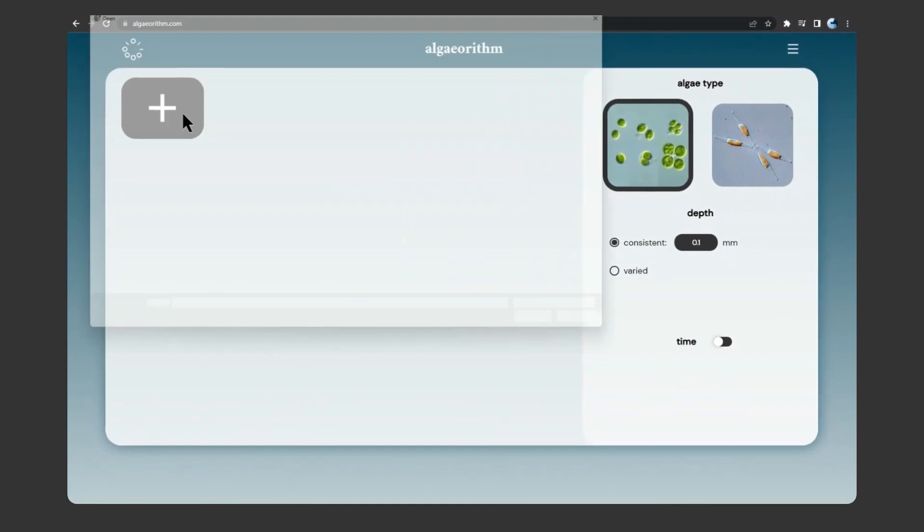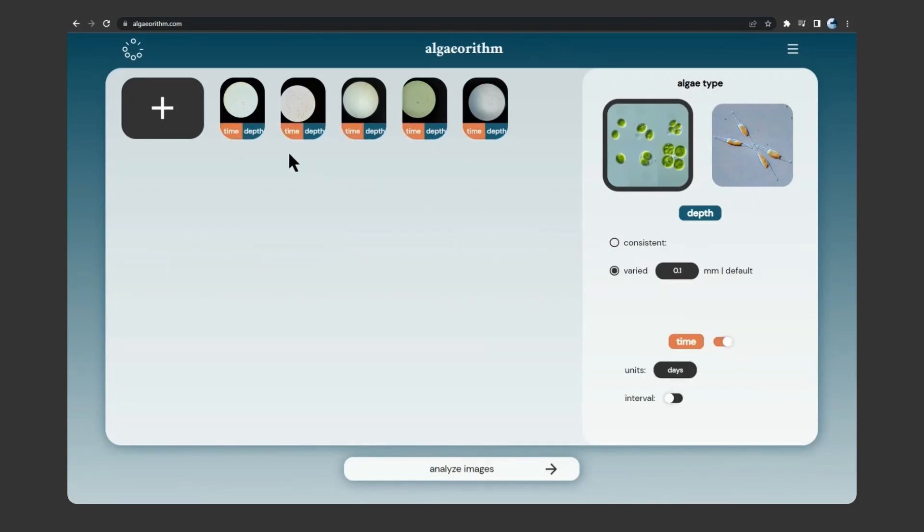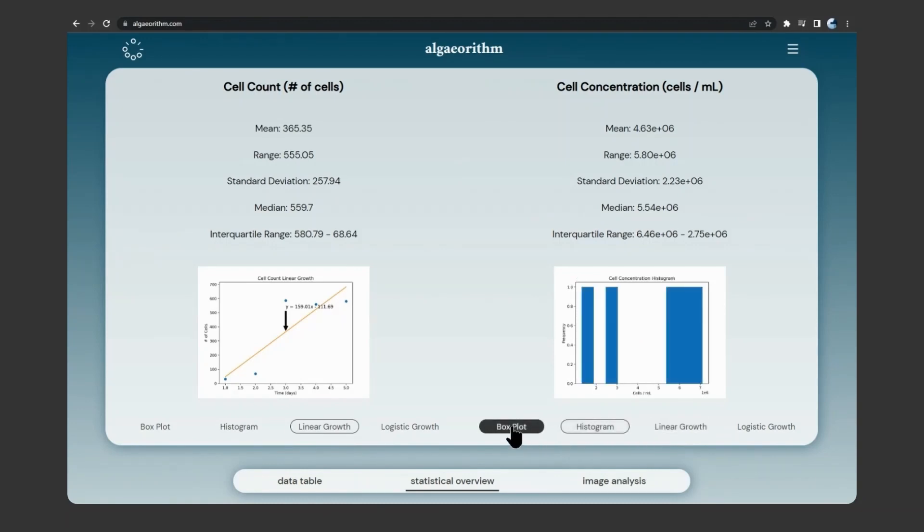With AlgaeRhythm, students first upload images from their experiments and have the option to include algae species, sample depth, and the time each image was taken. After image submission, the neural network returns an array of cell count and concentration statistics and computes multiple models to predict future algae growth.